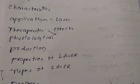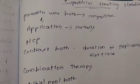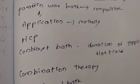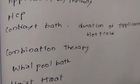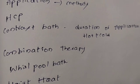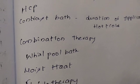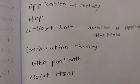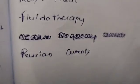Orthostatic hypotension — this is normal and a two-mark question. Superficial heating modalities: paraffin wax bath therapy, composition, application methods. Also hydrocollateral packs (HCP), contrast bath therapy — alternating cold and hot application, whirlpool bath, moist heat, and fluidotherapy. Very important topics.